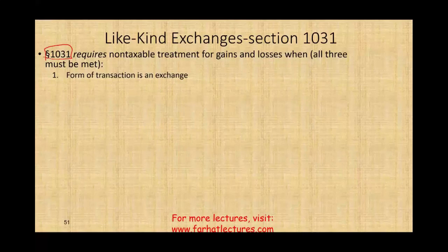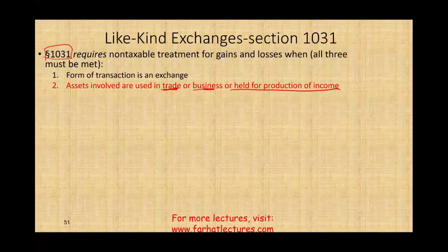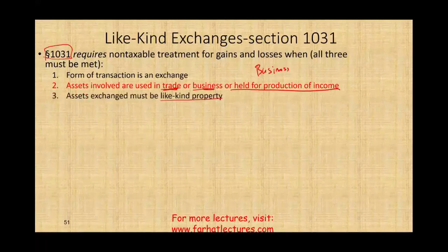The three conditions are: (1) the form of the transaction is an exchange; (2) the assets involved are used in a trade or business or held for production of income — Section 1031 applies to business or income-producing property, not personal use property; and (3) the assets exchanged must be like-kind. On the CPA exam, they may present a question involving personal use property or personal property and you should know not to apply the Section 1031 calculation.